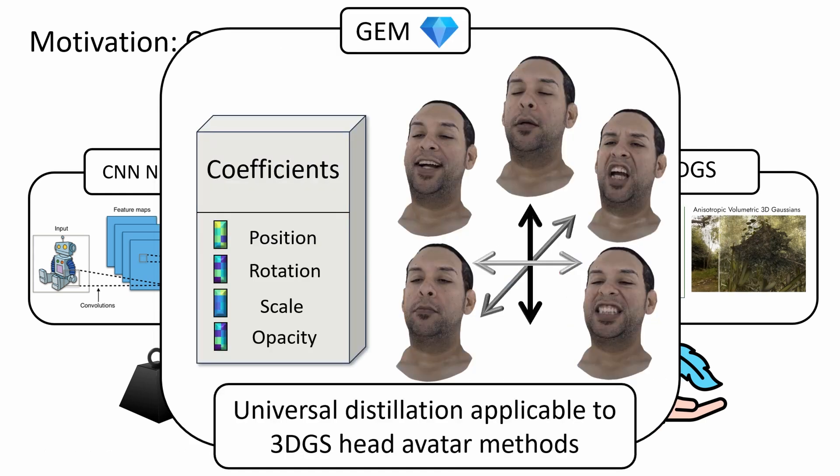GEM effectively addresses this tradeoff by distilling avatars into a lightweight ensemble of PCA bases. This approach enables the generation of new 3D human heads through a linear combination of the underlying PCA bases, which is very compute and memory efficient. Furthermore, it offers adjustable compression.